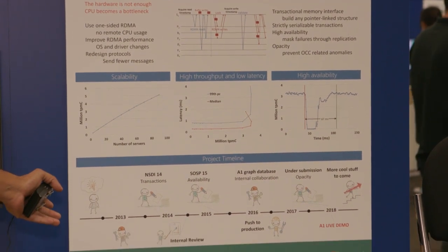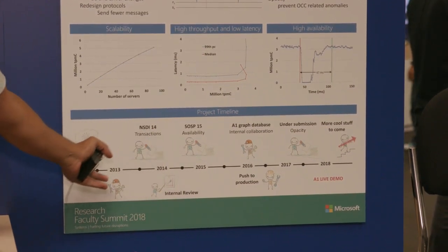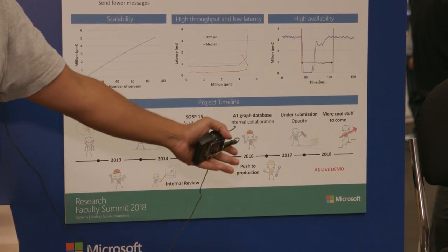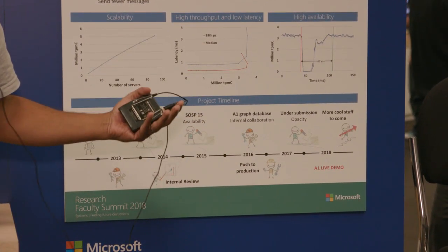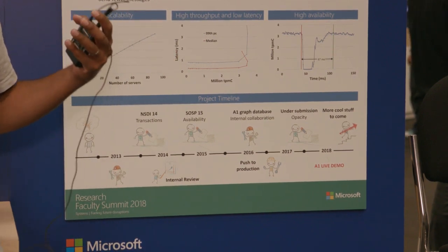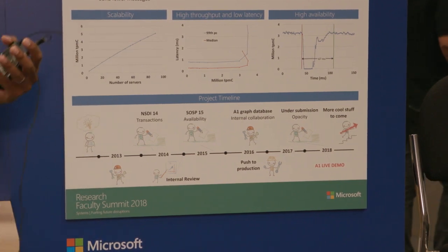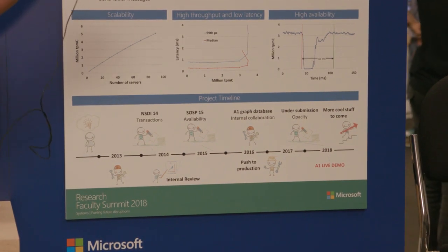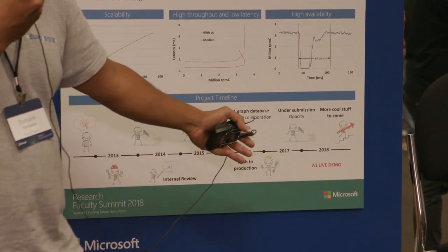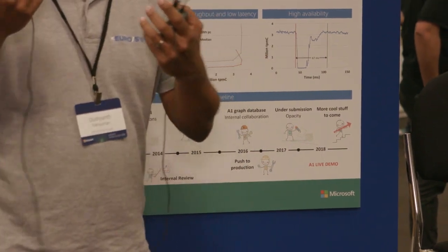So FARM as a research idea started about five years ago. And we did the foundational research on FARM over the next two years. And over the last three years, we have been pushing FARM to production as well as building A1, a graph database that we're exposing to internal customers in Microsoft, because there was a huge need for a good graph platform with high performance scalability and high availability. And so where we are now is that we've just gone live with our first scenario for this graph platform.